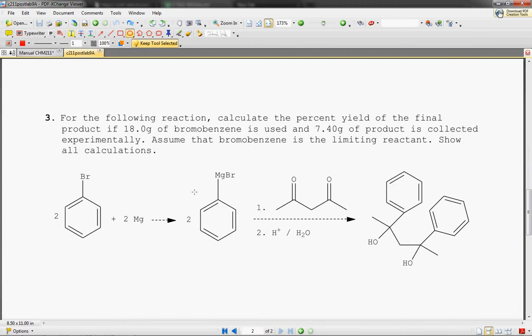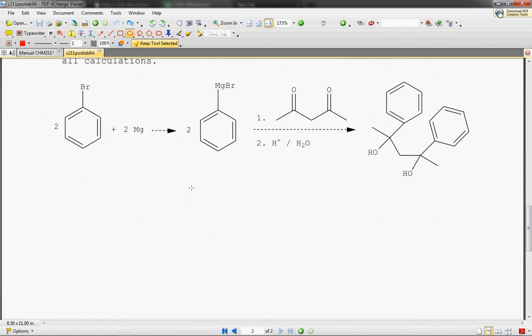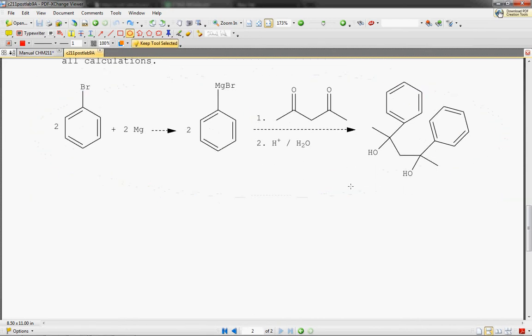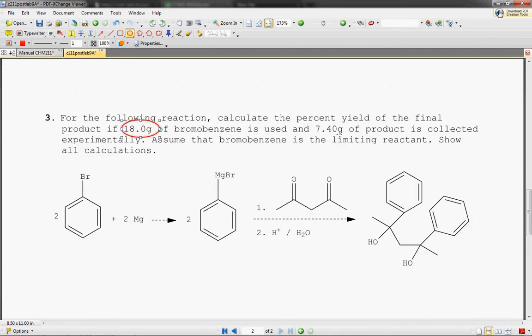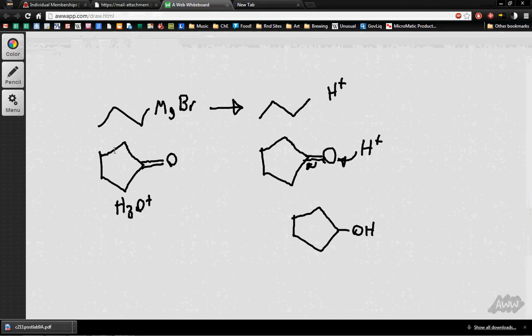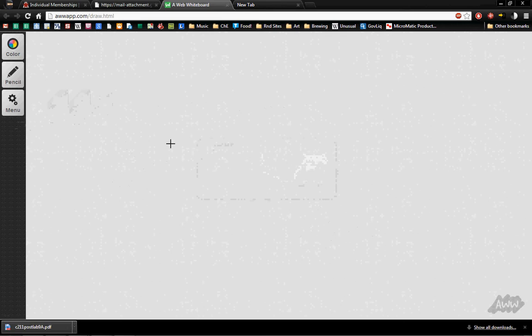So very few people got this correctly, and so I wanted to walk through this problem. So it's asking you what sort of yield you got. And so yield is essentially what you could have gotten over what you did get. So everyone just took these masses, they just took 18 grams and 7.4 grams and divided them and said it's 41%. But that is absolutely not right.